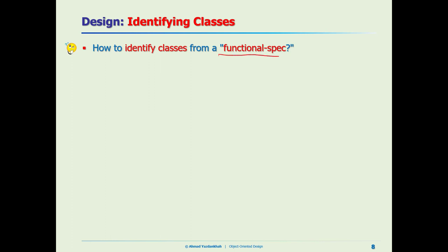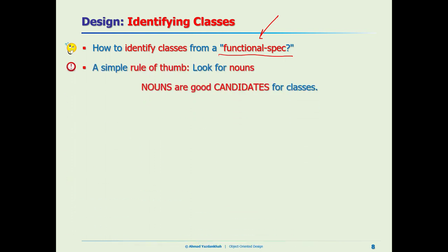We should read the functional spec — when I say 'we' I mean we as the designer. We read the functional spec and we have a rule of thumb: we need to look for the nouns. Nouns in the functional spec are very good candidates for being classes. I'm emphasizing 'candidates' — there might be some nouns that are not suitable for being a class.